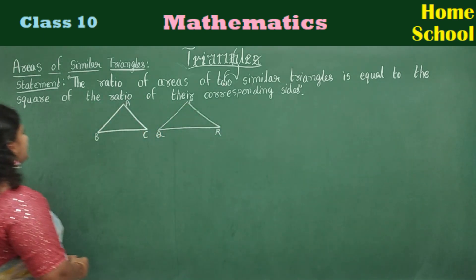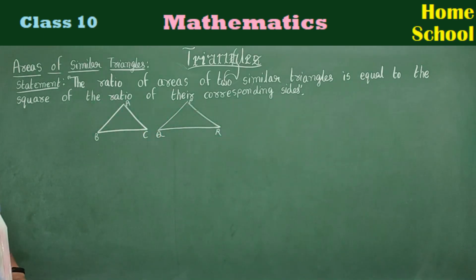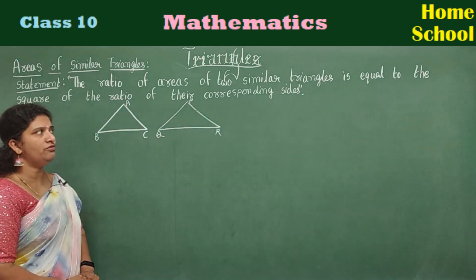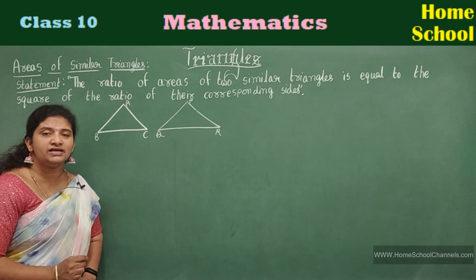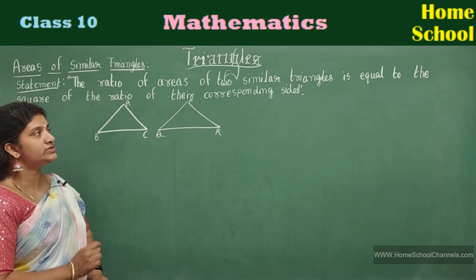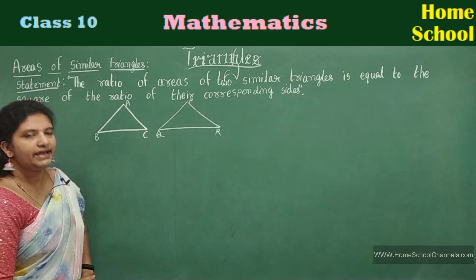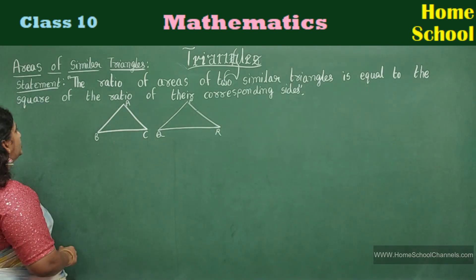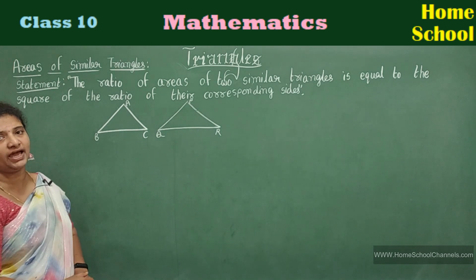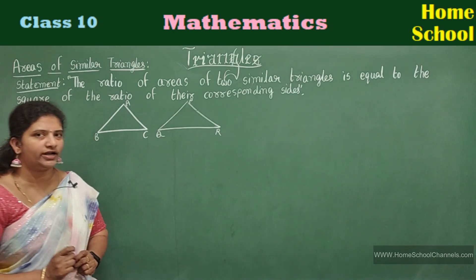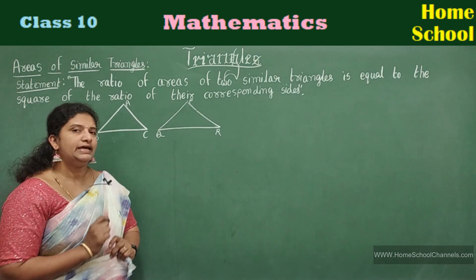Statement: The ratio of areas of two similar triangles is equal to the square of the ratio of their corresponding sides.